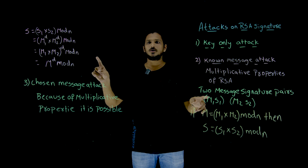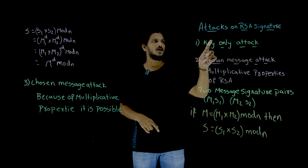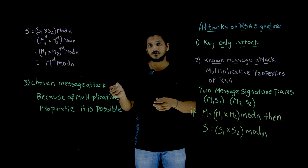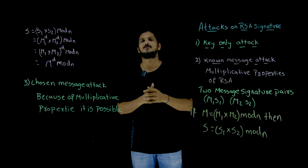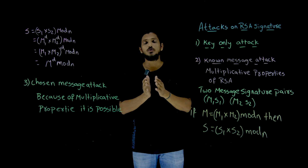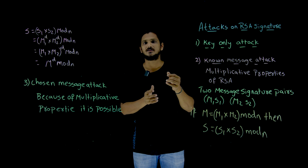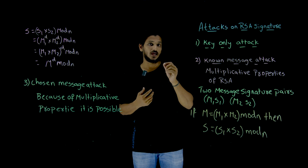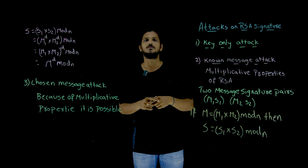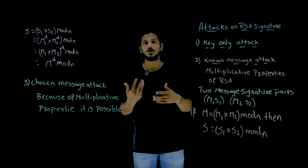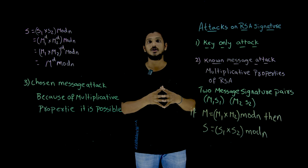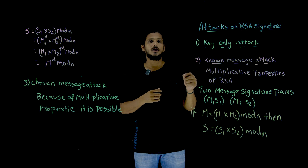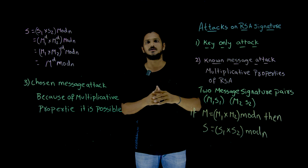So these are the two message attacks possible on RSA signature. But how to overcome this? As discussed in earlier classes, instead of signing a message directly, just do the signature on the message digest. If signing is done on the message digest, these attacks are not possible. In our next class we are going to discuss what types of attacks you get if you sign on a message digest using RSA signature scheme.